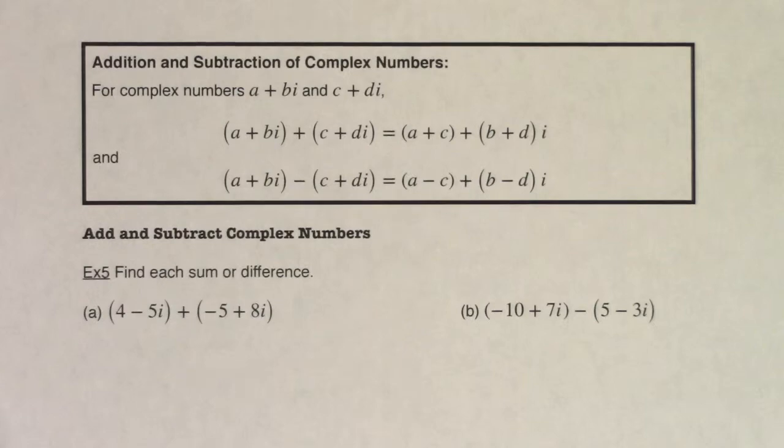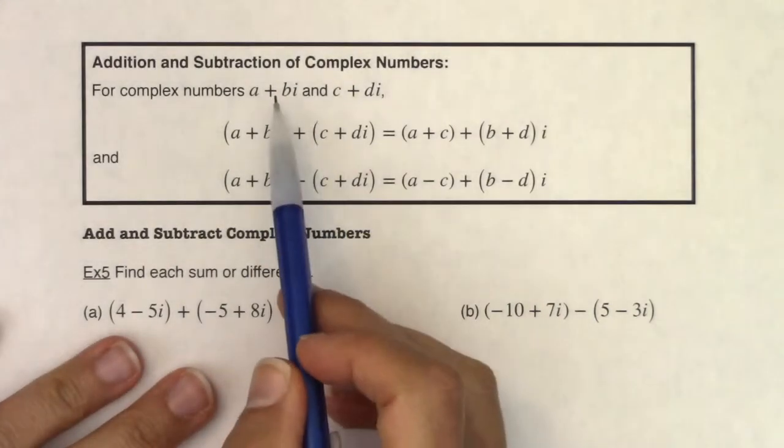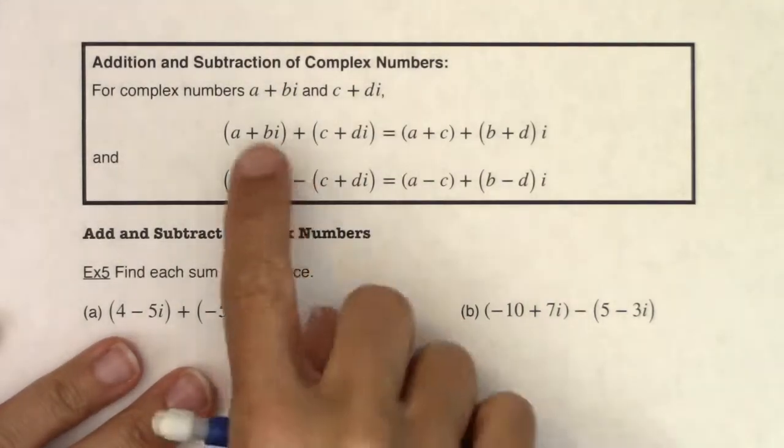Hey Math 31, let's take a look at how we add and subtract complex numbers. If we have two complex numbers, a plus bi and c plus di, and we want to add them,